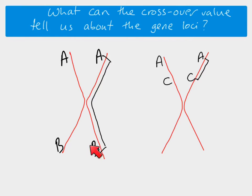If the gene loci are far apart, they're much more likely to be separated, which means it's more likely you'll end up with recombinant chromosomes, and you'll be more likely to get offspring with those recombinant phenotypes. So the smaller the crossover value is, the closer together the gene loci are.